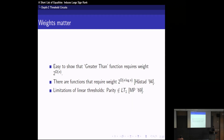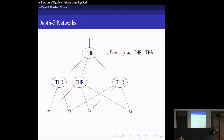However, linear threshold functions are not as powerful as one might hope — they can't compute simple functions like parity. The parity function outputs 1 if and only if the sum of input bits is odd. Minsky and Papert showed that parity cannot be computed by linear threshold functions. So what happens when you compose gates? You get a threshold of threshold, where inputs feed into a layer of threshold gates which all feed into a single threshold gate.